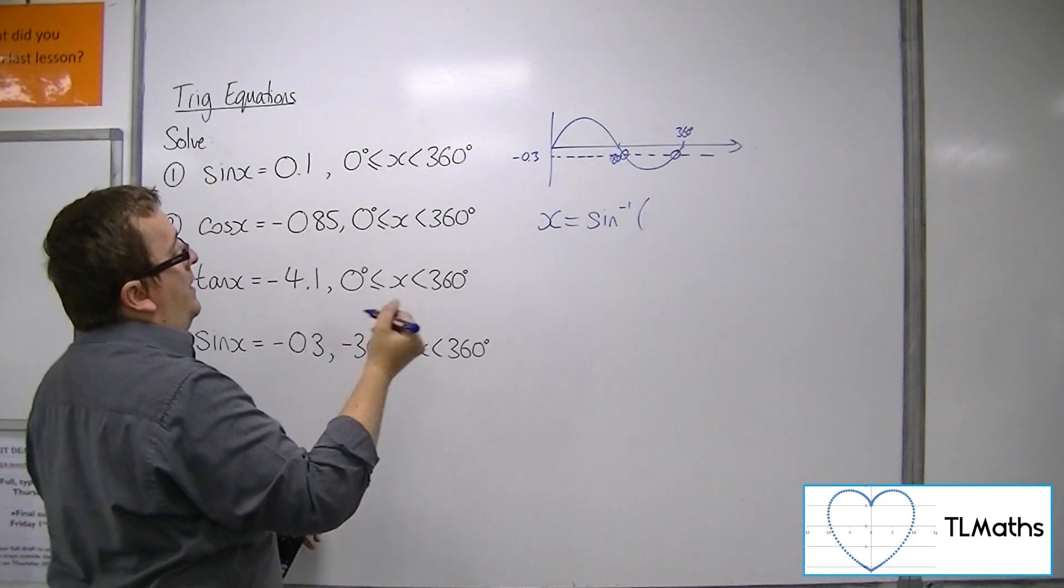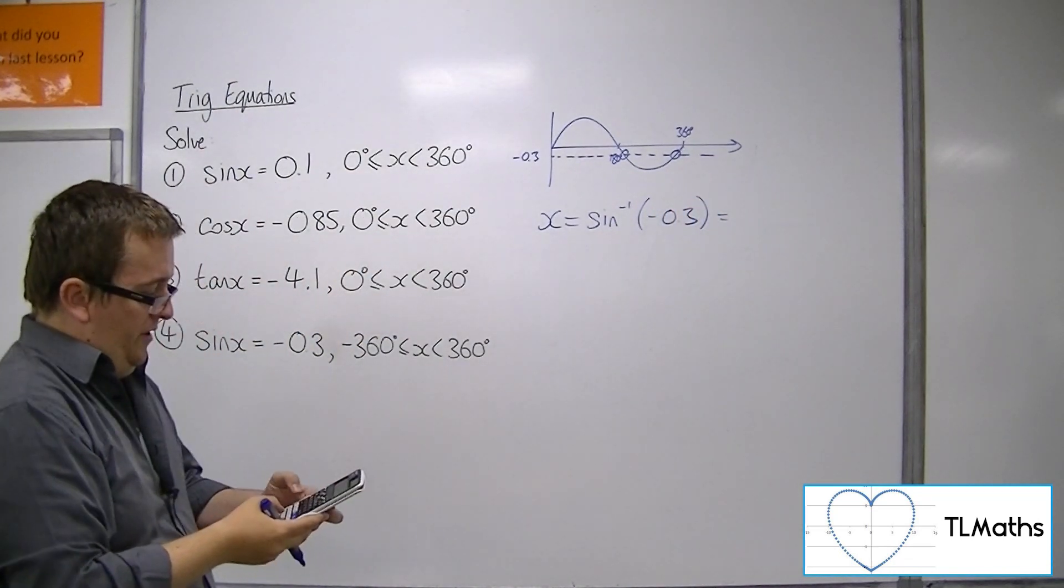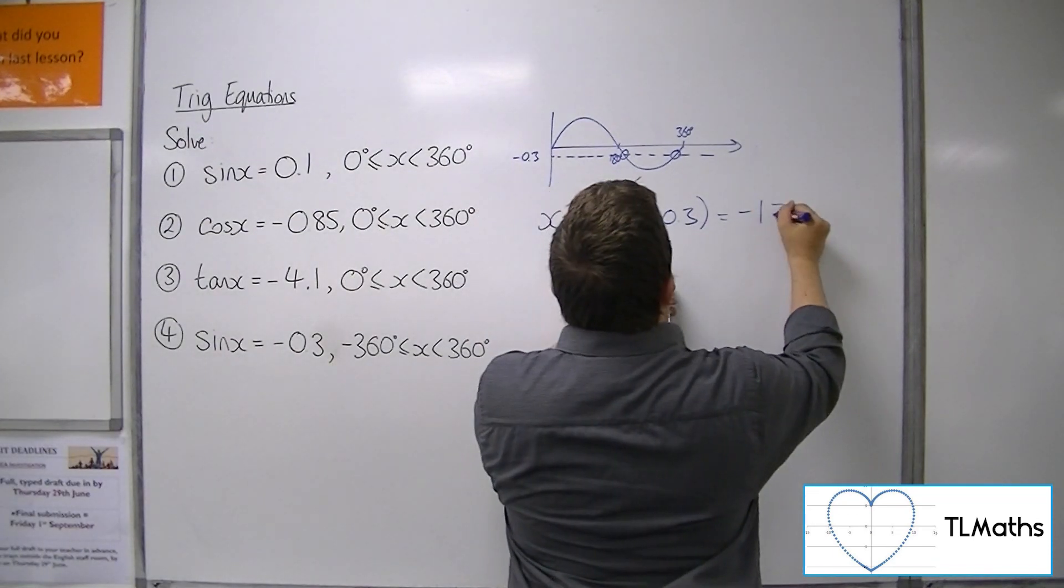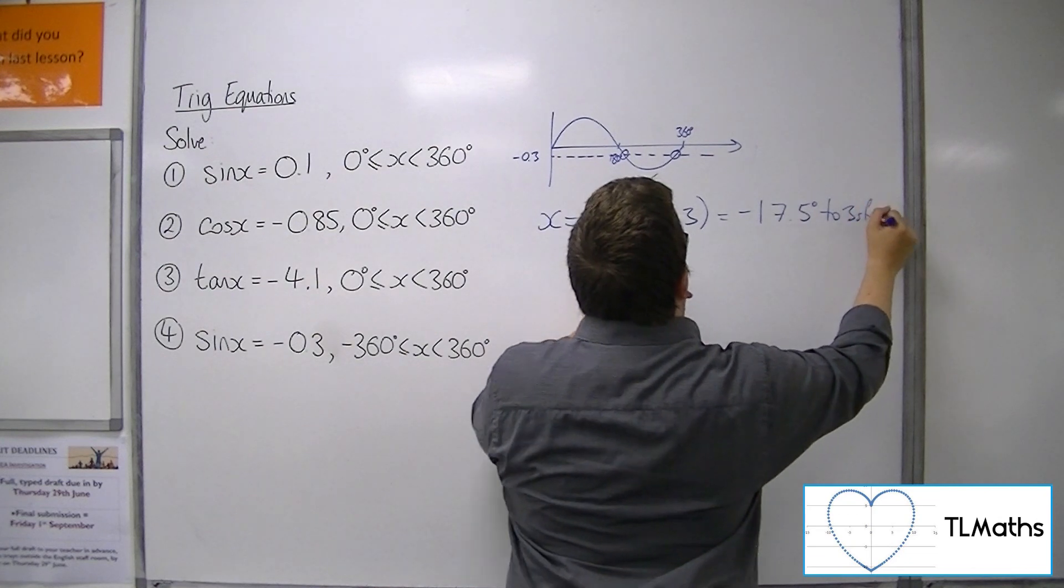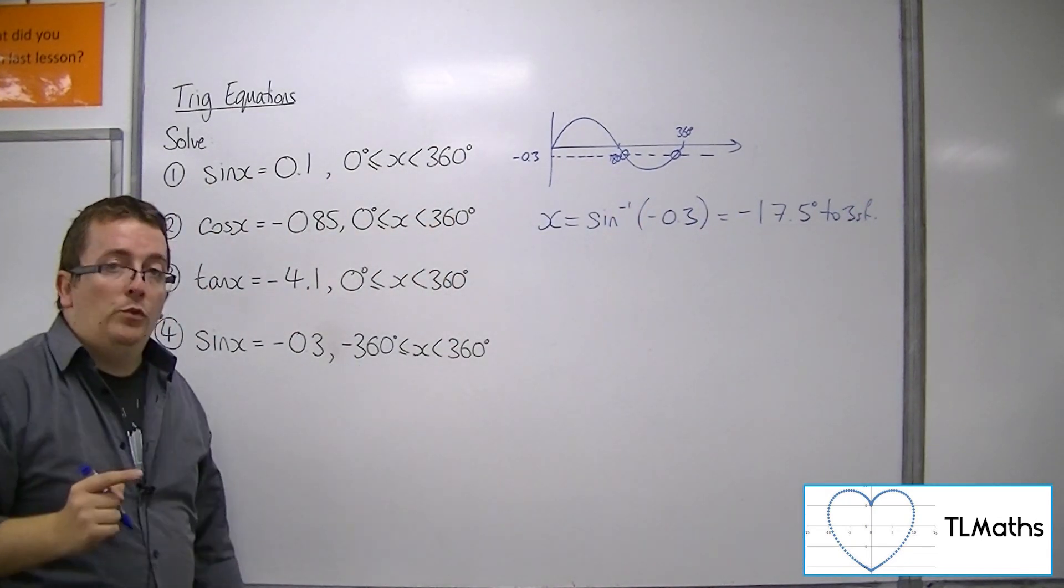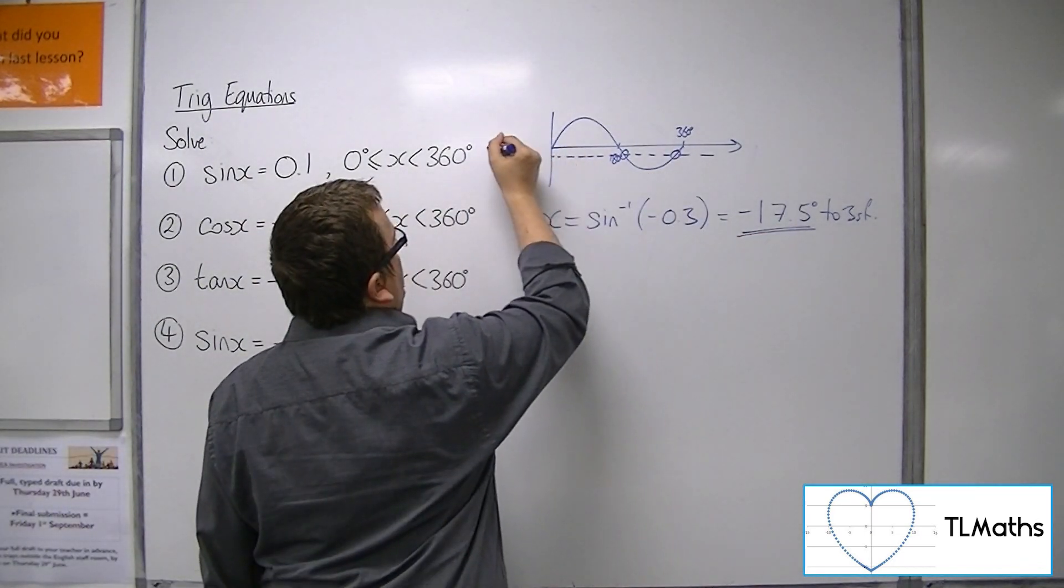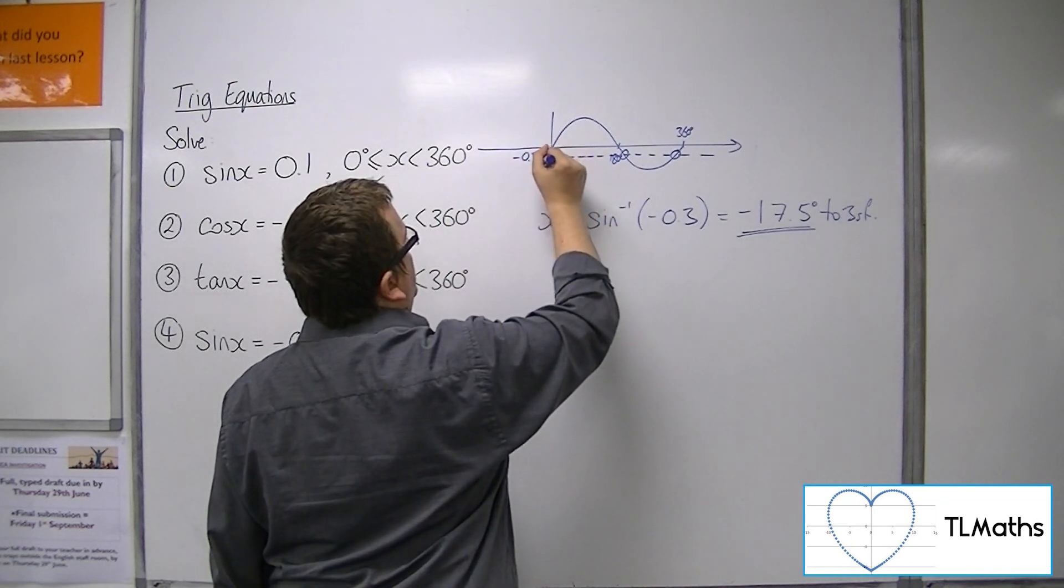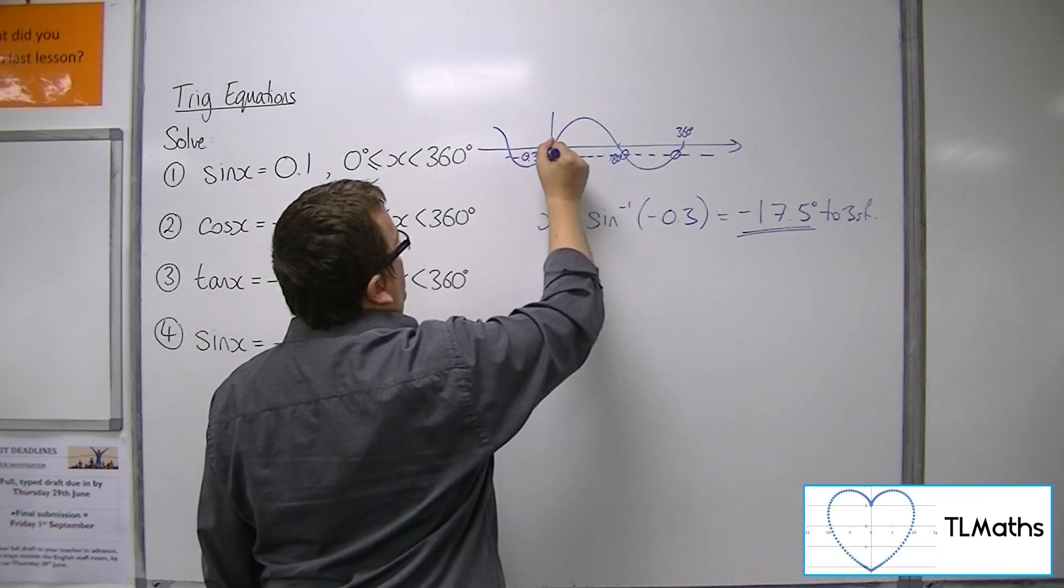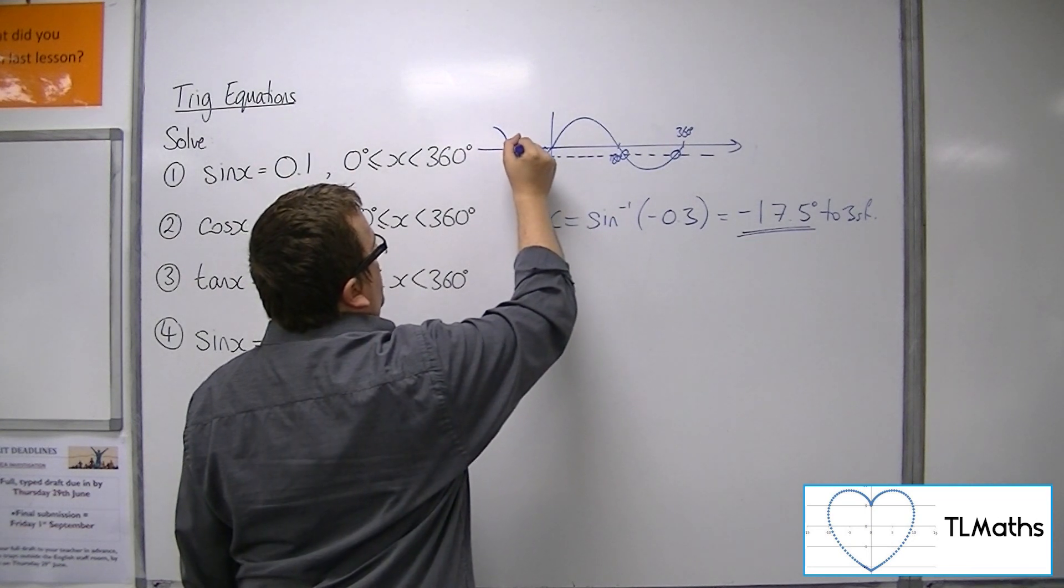So let's see what happens. Inverse sine of minus 0.3 is minus 17.5 degrees to 3 sig fig. Now that is an answer between minus 360 and 360, so that is perfectly good as a solution. Now the reason why you're getting that solution is because the curve is continuing back round, and your calculator is picking up that solution there.